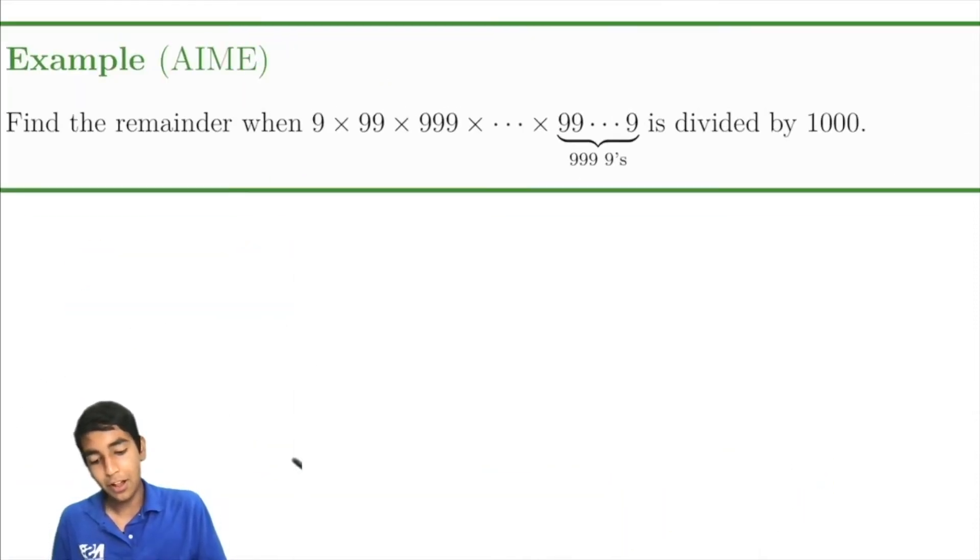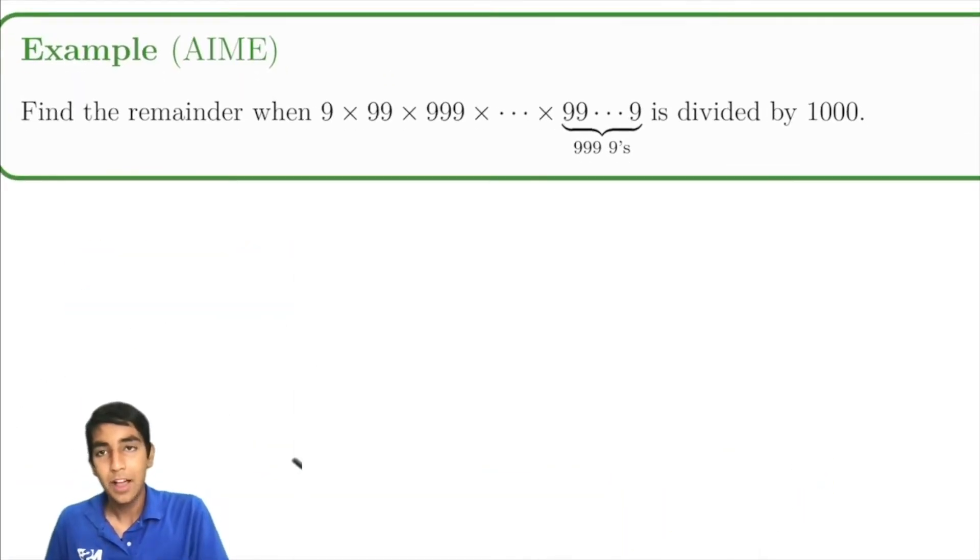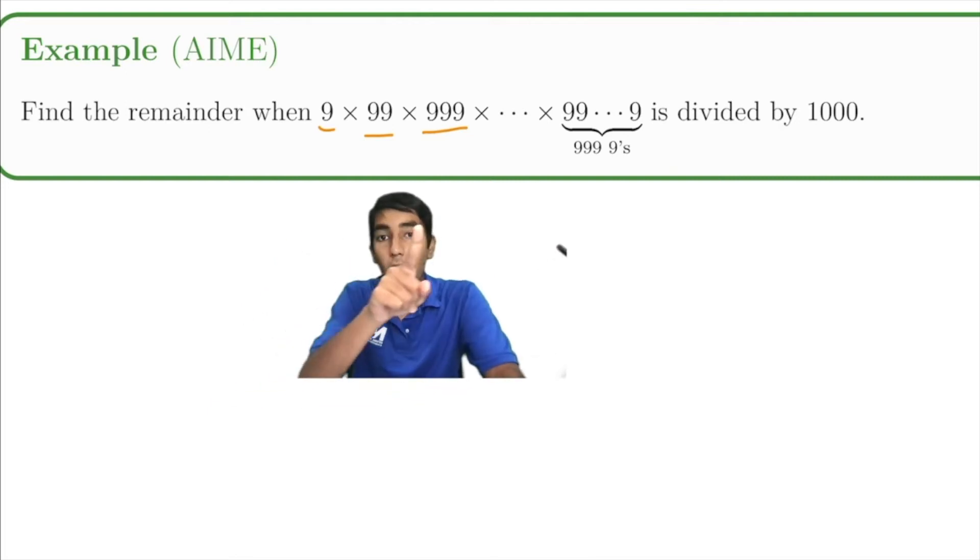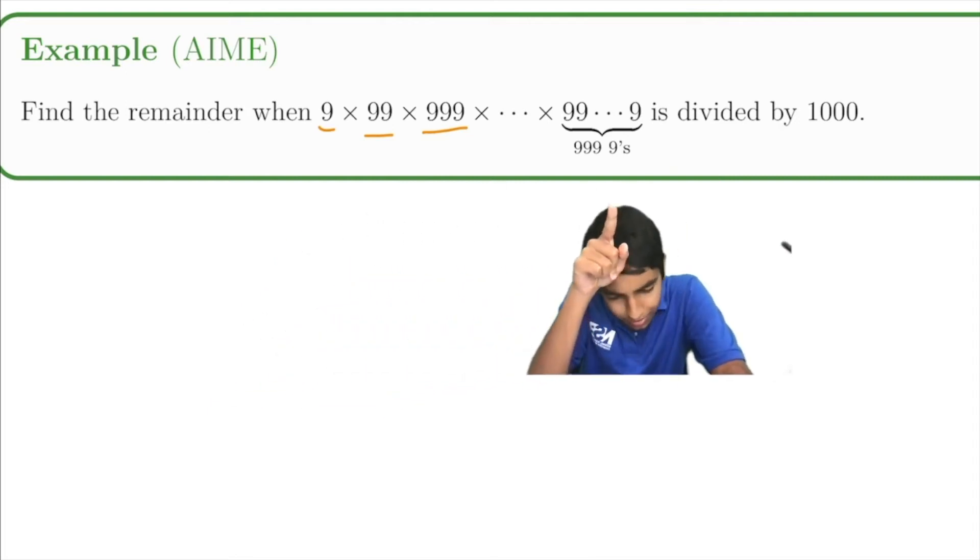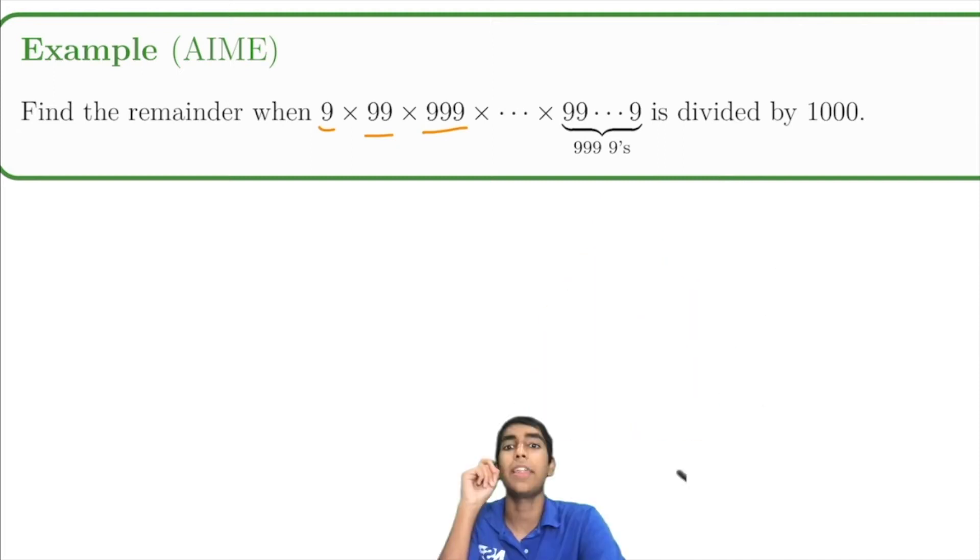Here's a cool example from the AMC. Find the remainder when 9 times 99 times 999, so on, all the way till 999 nines is divided by 1,000.